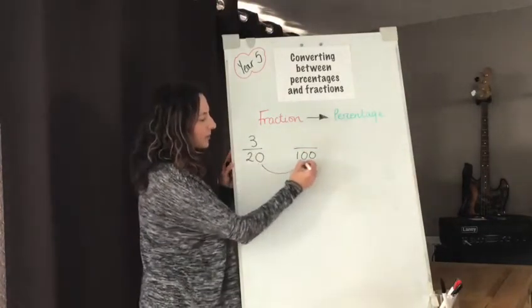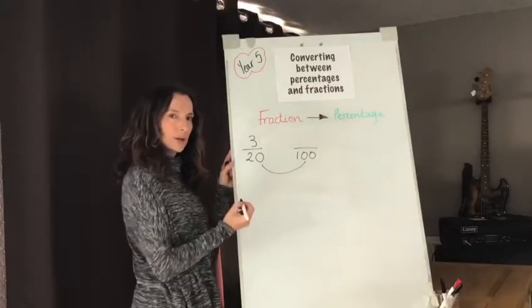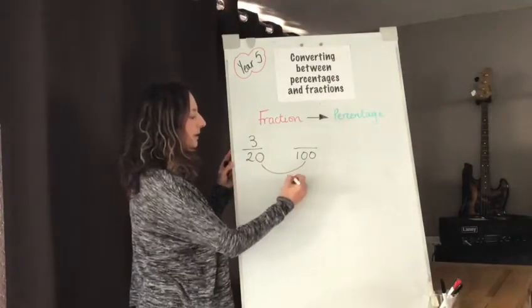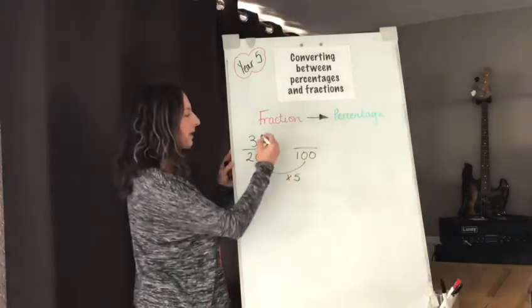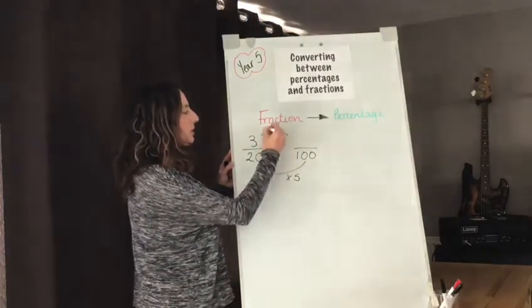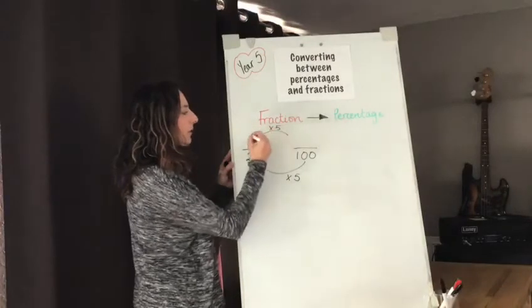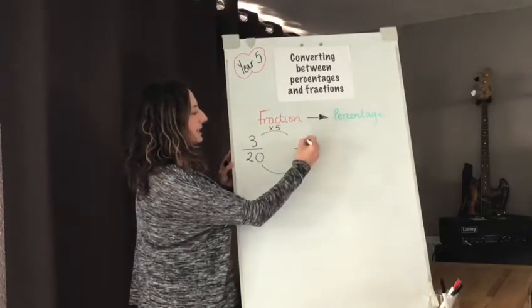So I ask myself how do I get from 20 to 100? I multiply by 5 and whatever I multiply the denominator by I need to do the same to the numerator. 3 times 5 is 15.